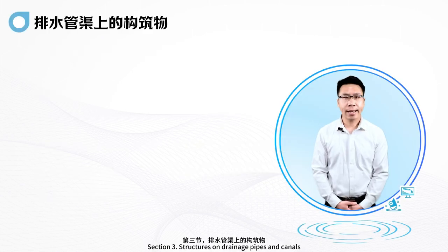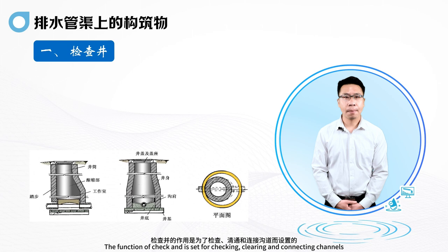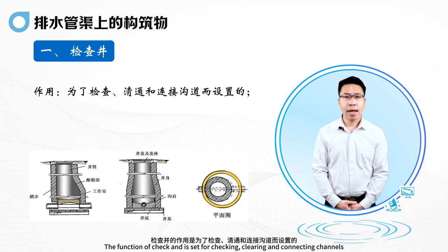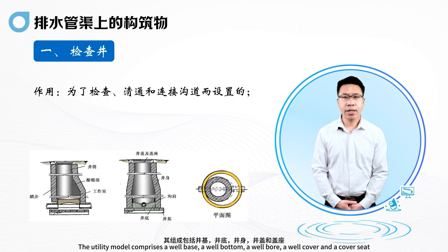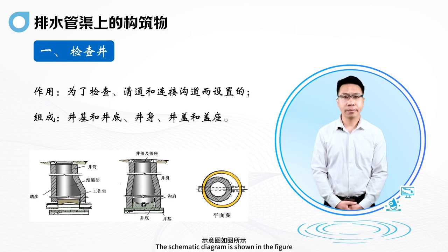Section 3: Structures on drainage pipes and canals. The first is the inspection well. The function of the inspection well is set for checking, clearing, and connecting channels. It comprises a well base, a well bottom, a well bore, a well cover, and a cover seat. The schematic diagram is shown in the figure.